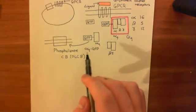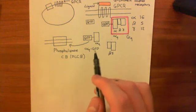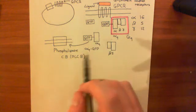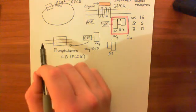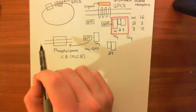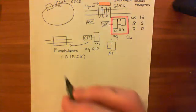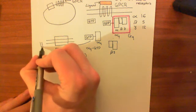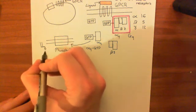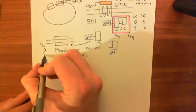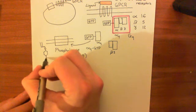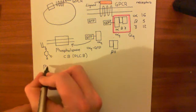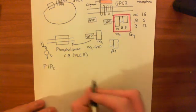When PLC-beta is activated by alpha-Q GTP, it takes a component of the phospholipid bilayer and breaks it down. The component it acts on is a molecule known as PIP2, which stands for phosphatidyl inositol 4,5-bisphosphate. PIP2 is very often denoted by that abbreviation.